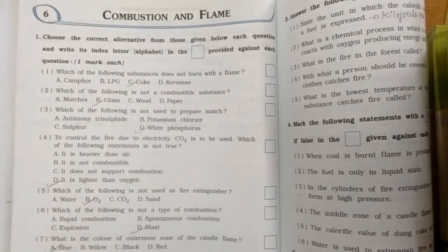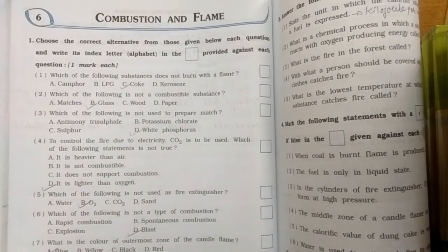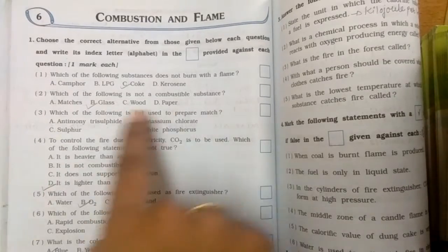Okay, this is your homework. So question number 1 is MCQs. First, which of the following substances does not burn with a flame? The answer is charcoal. Second, which combustible substance does not burn with flame? Glass.